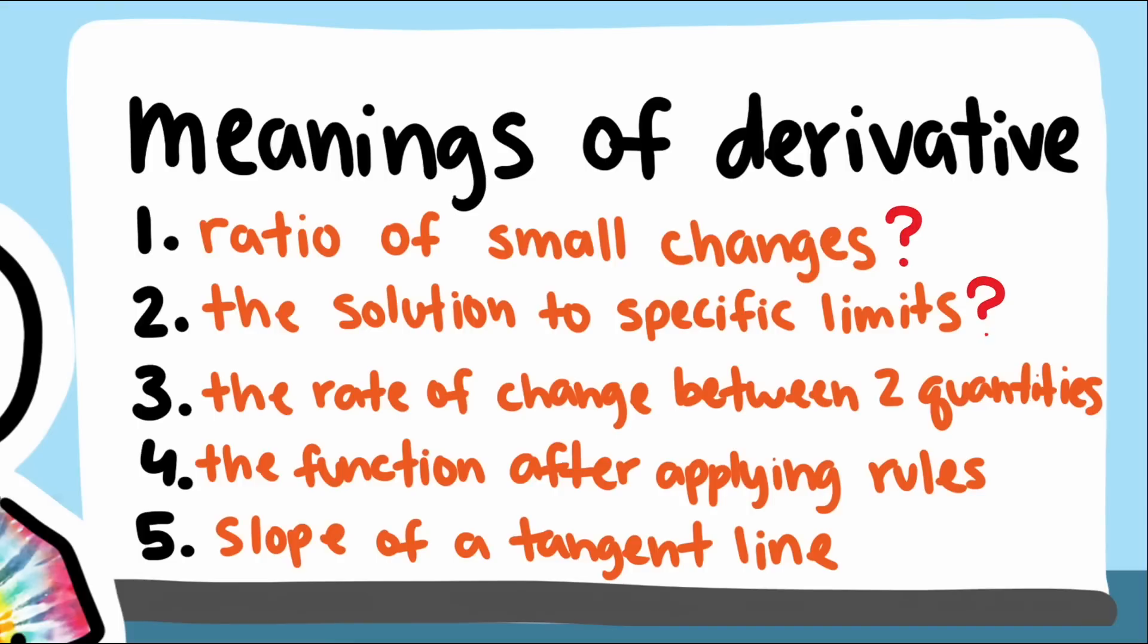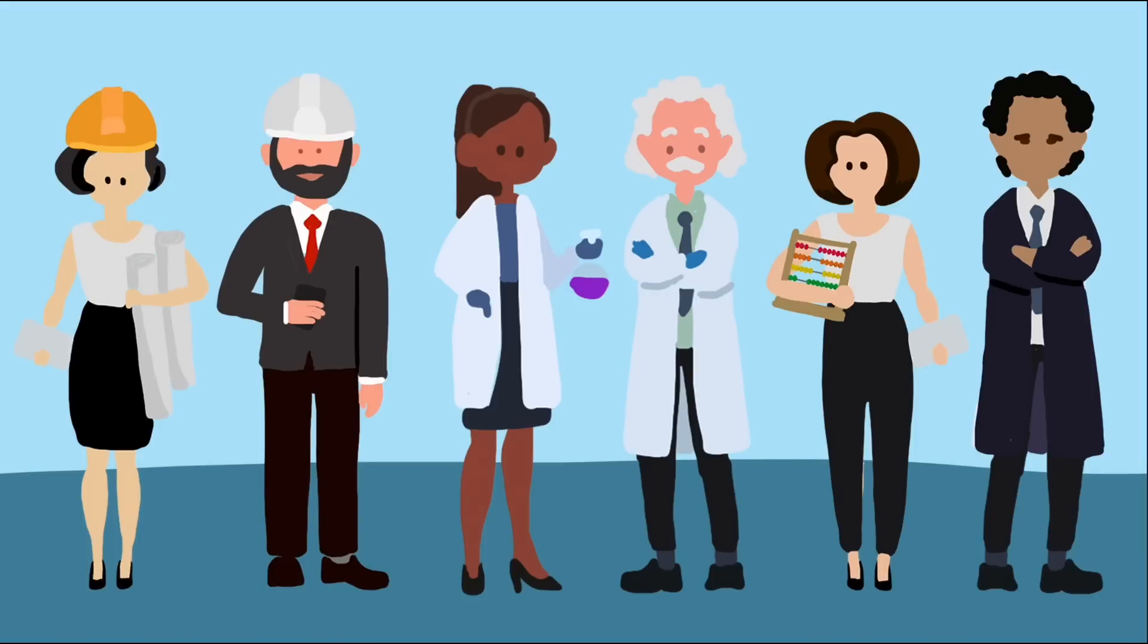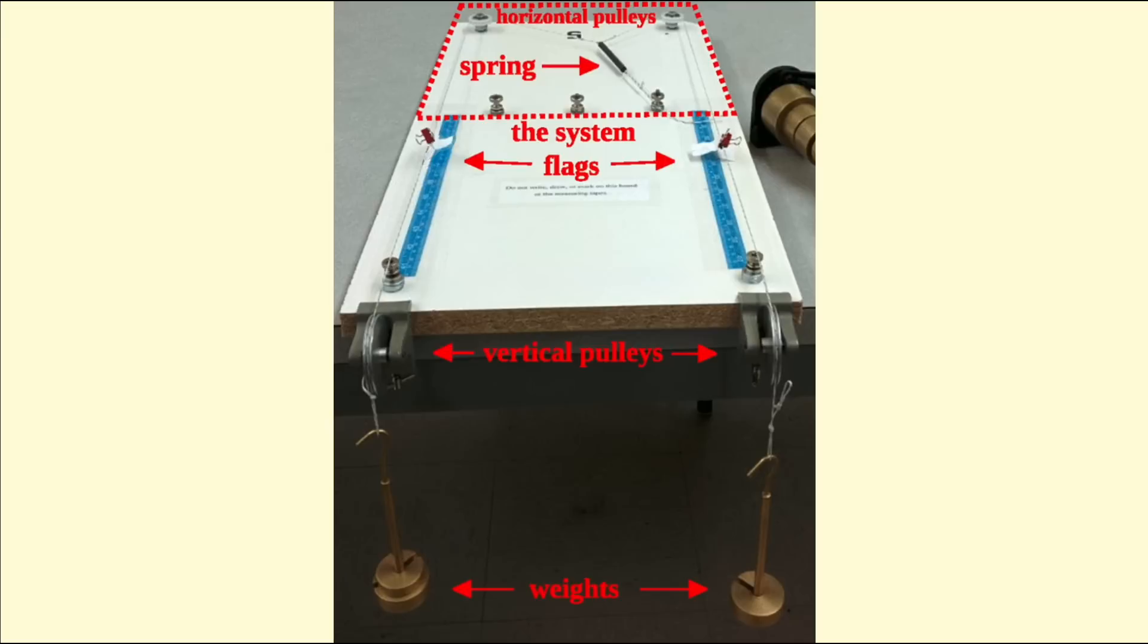So which of these conceptions about derivatives are helpful in real-world problem solving? Let's see how the engineers, scientists, and mathematicians tried to solve a real-world problem. The problem the three groups of professors were asked to solve was to find a certain derivative in a system of weights, strings, and springs.